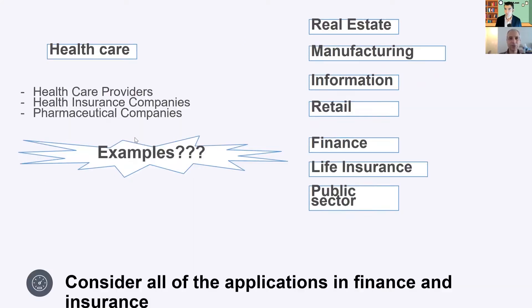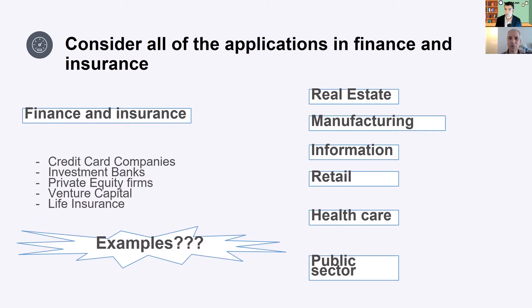Let's go to the next one: finance and insurance. Predictive modeling in finance and insurance — credit card companies are doing predictions. They have to predict what's the probability that someone is going to charge off. If they charge off and don't pay, how much do they owe? That's a big deal. Are they going to declare bankruptcy? If so, how much will the company lose?